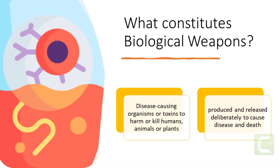Biological weapons disseminate disease-causing organisms or toxins to harm or kill humans, animals, or plants. Biological and toxin weapons are either microorganisms — like viruses, bacteria, or fungi — or toxic substances produced by living organisms that are produced and released deliberately to cause disease and death in humans, animals, or plants.